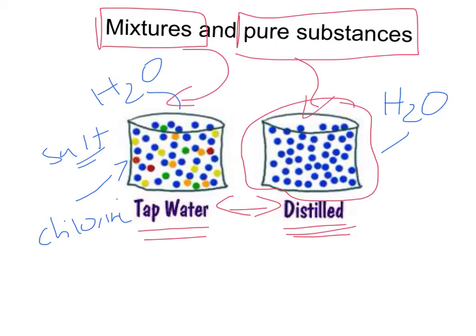So make sure you have an idea of what a mixture is compared to pure substance. Mixture is where we have lots of different types of particles in there. Tap water would be one example, whereas a pure substance would be where there's only one type of particle. In this case we've only got these H2O particles, these water particles. There's nothing else in there.